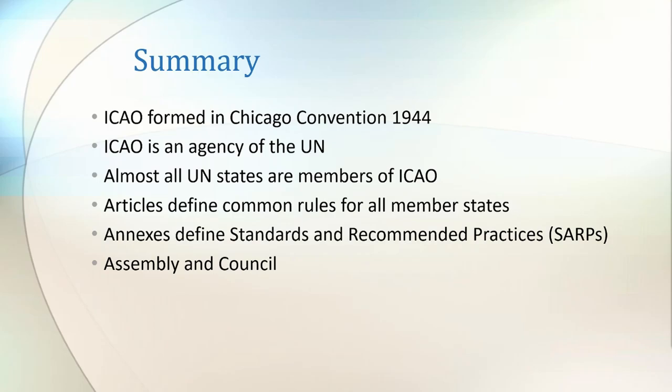In summary, ICAO was formed from the Chicago Convention of 1944 and is an agency of the UN. Almost all members of the UN are also members of ICAO. ICAO articles define common rules that all member states must adhere to, and ICAO annexes define standards and recommended practices. We also had a look at the structure of ICAO, how it forms an assembly, and how this assembly forms a council. Links are provided in the description to relevant sections of the ICAO website covering the topics discussed.